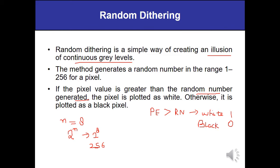For example, if the pixel intensity value is 10 and the random number generated is 2, the pixel value is greater than the random number so the output is written as 1. But if the pixel intensity value is 6 while the random number generated is 8, then the output is represented by 0. This is the simplest dithering technique.